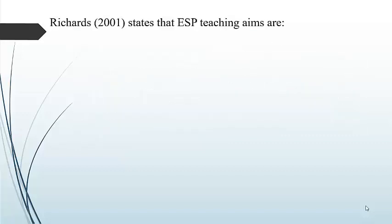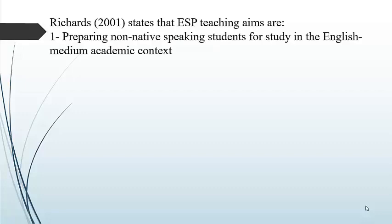In 2001, Richards states that ESP teaching aims are as follows. The first objective is preparing non-native speaking students for study in an English-medium academic context. In this case, you are going to teach learners who need this foreign language for study purposes, and as they are non-native speakers, they may not have a good level of English, so you have to prepare them in that specific academic context.